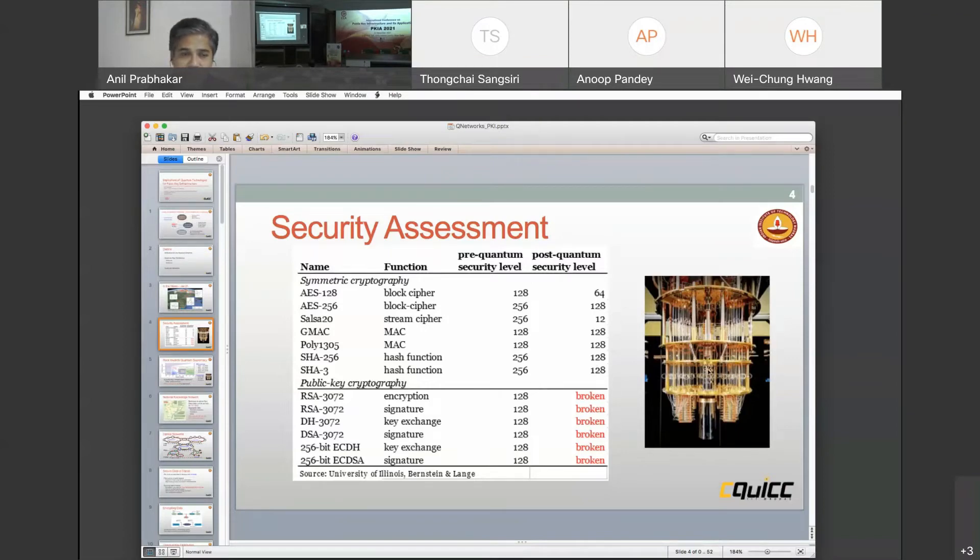Here is a picture of a quantum computer. A lot of this is actually just what is called a dilution refrigerator. It takes the temperature of the little chip that sits at the bottom to about 0.1 millikelvin. Liquid nitrogen is 70 Kelvin and liquid helium is 4 Kelvin. So you are going well below liquid helium temperatures. It is probably one of the coldest experiments that runs today.